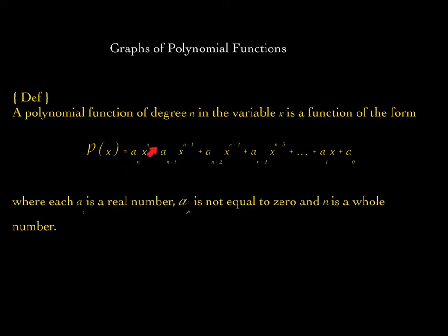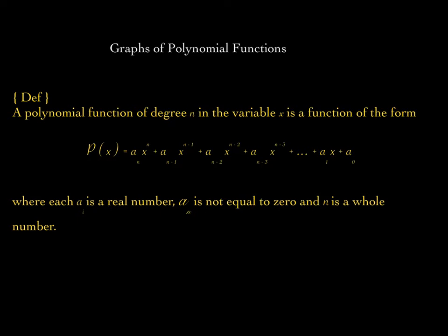This dominating or leading term will determine how the graph of this polynomial function will behave. A sub 0 is your constant term, and therefore is your y-intercept of the graph. If you let x be 0, every term that has an x will go to 0, and the only thing that will remain is a sub 0. So this is the y-intercept of the graph — that's really important when we start to graph these polynomial functions.